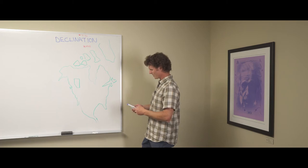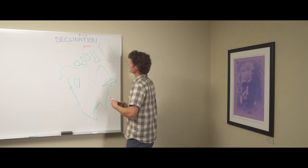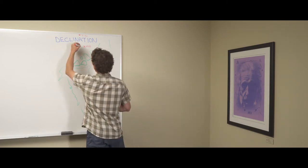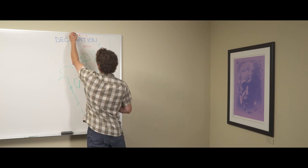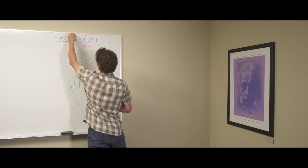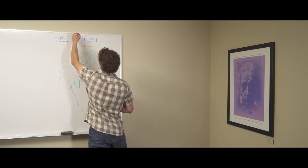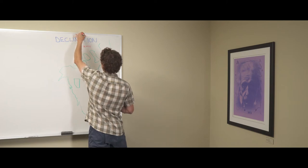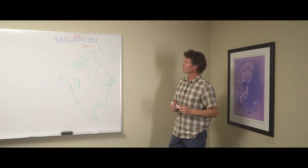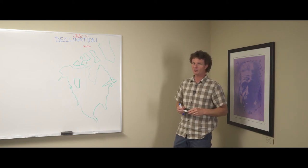And then there's finally another type of north, which is known as grid north. So grid north is right up here, very close to true north. So we got grid north, we got true north, and we got magnetic north.